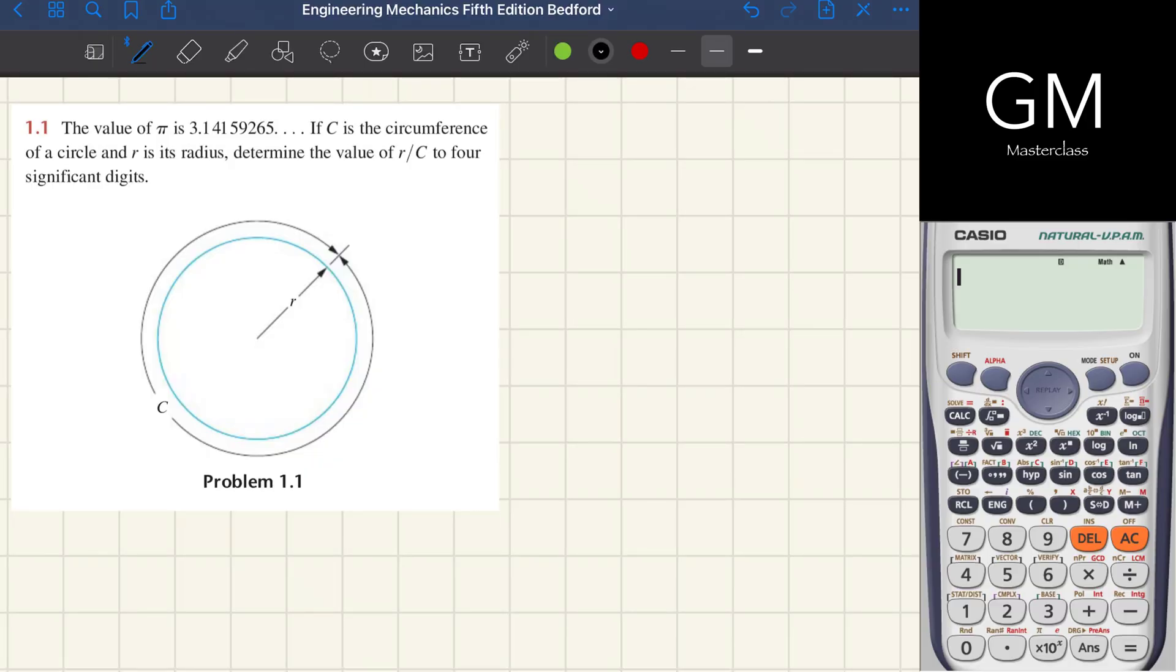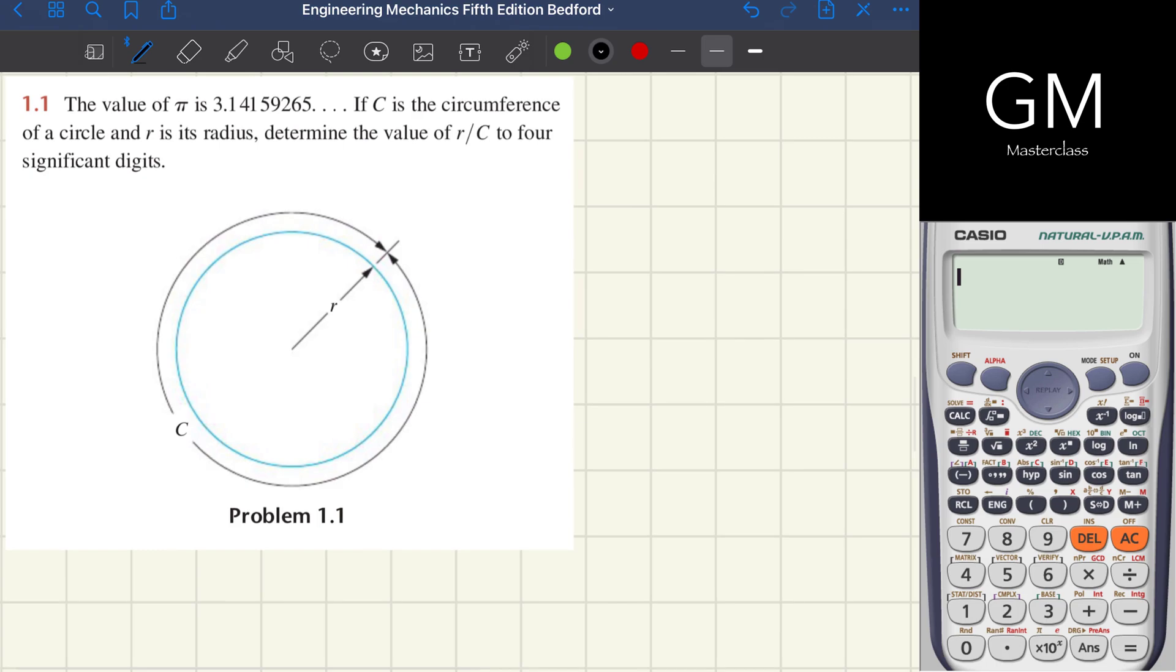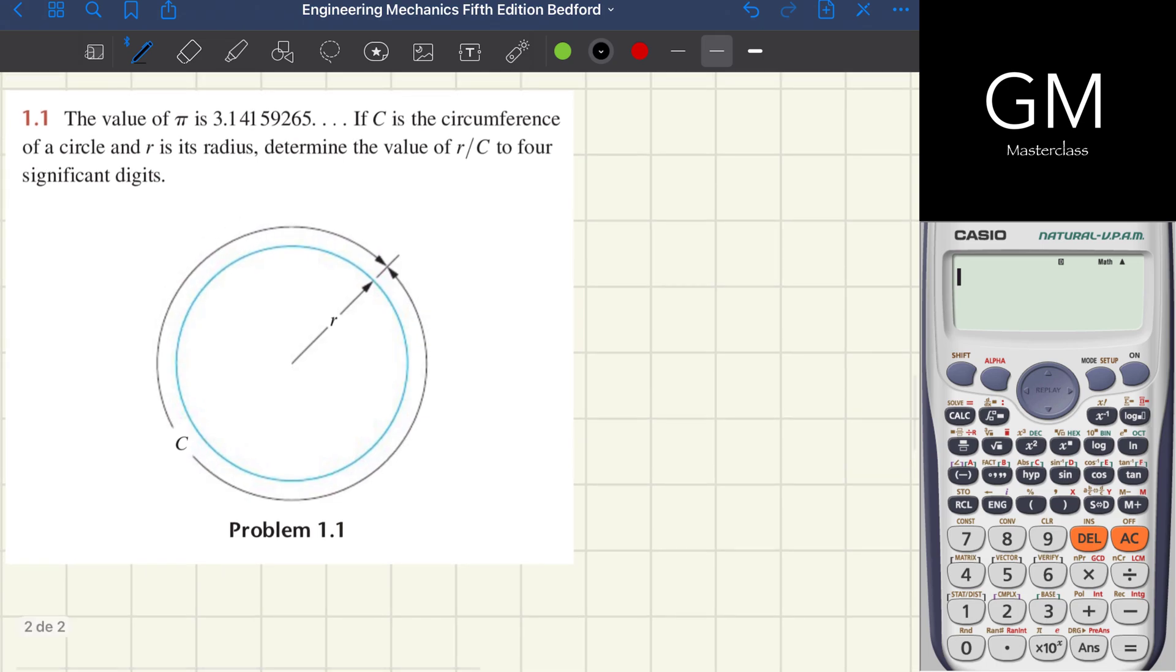We're going to solve this problem. The value of π is 3.14159265. If C is the circumference of a circle and R is its radius, determine the value of R divided by C to 4 significant digits.